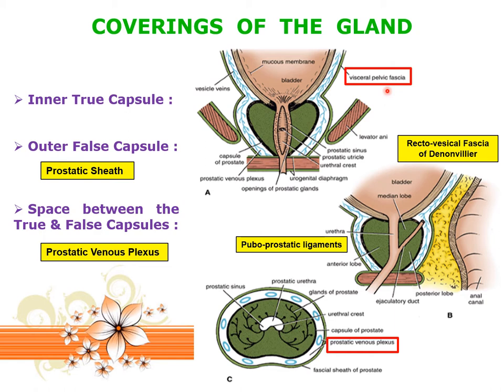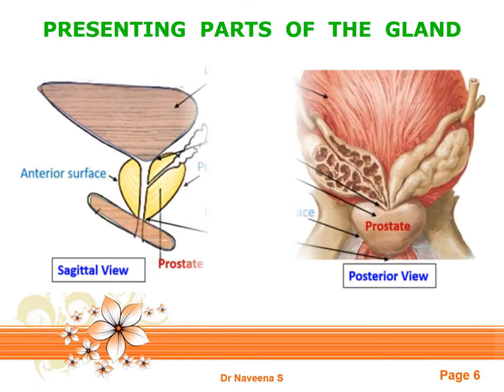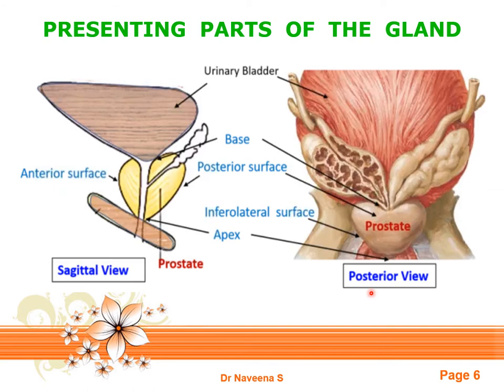As the prostate gland is a conical-shaped organ, its presenting parts include: base upwards, apex downwards, an anterior surface, a posterior surface, and two inferolateral surfaces. These can be observed in both the sagittal and posterior views of the gland.